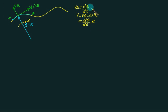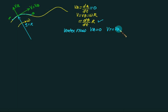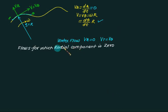If the radial component is equal to zero and we only investigate the tangential component, that is called vortex flow. In vortex flow, the radial component of velocity is zero and only the tangential component v_theta exists.